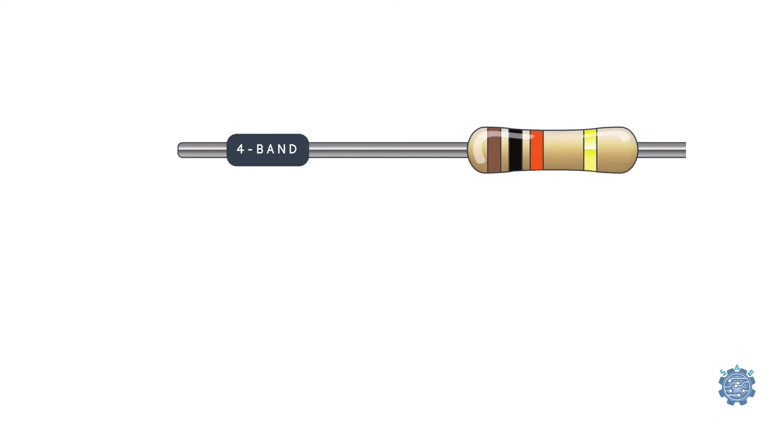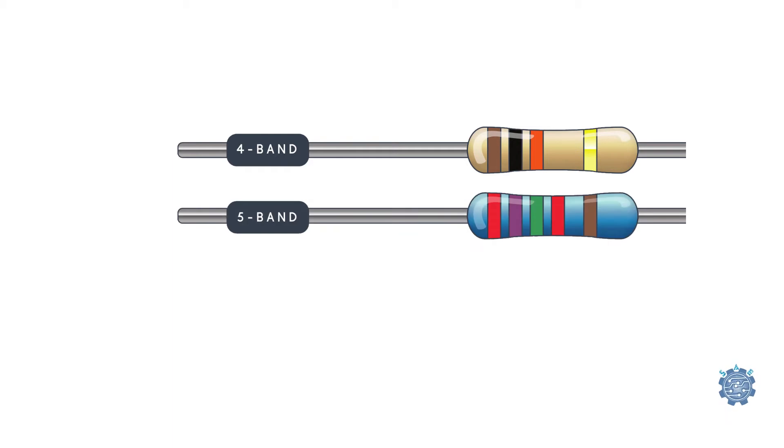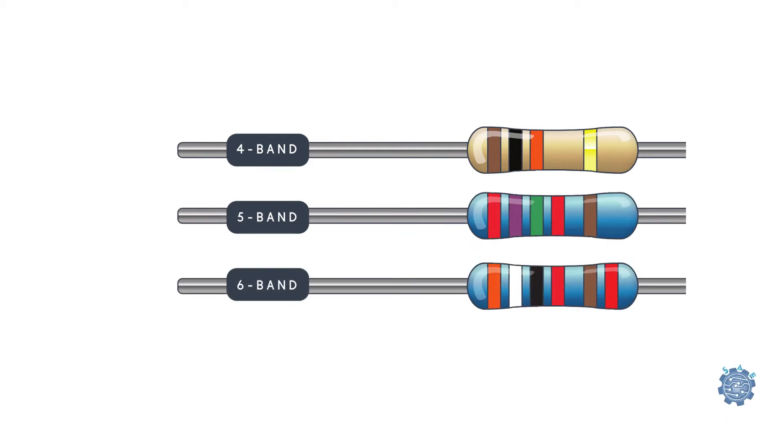The majority of through-hole resistors are marked with colored lines. Their value can be marked with 4, 5, or 6 lines and the last line is a little bit further away from the others.